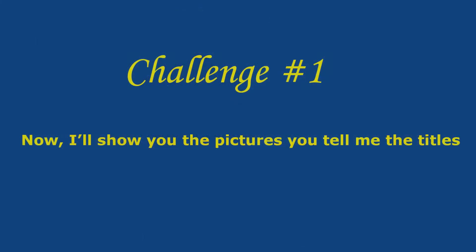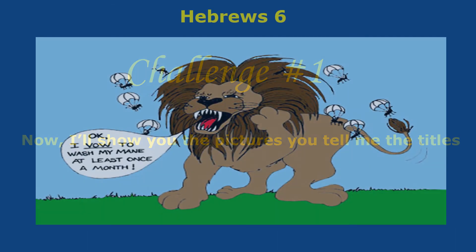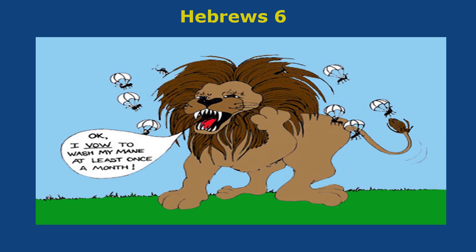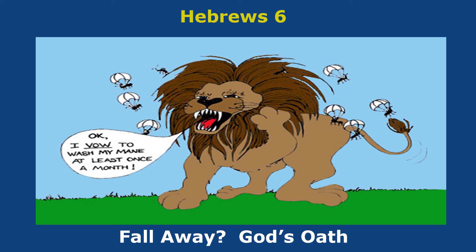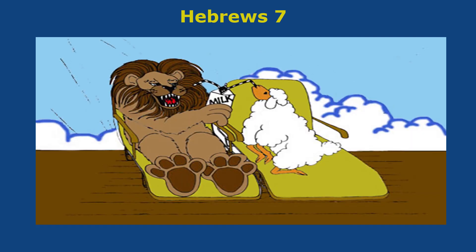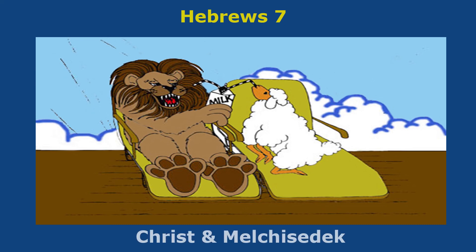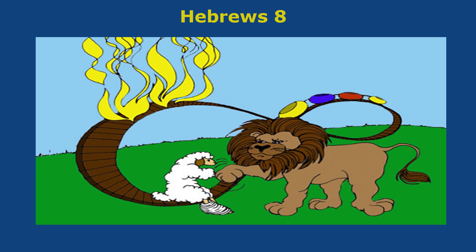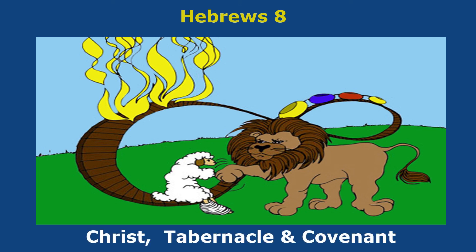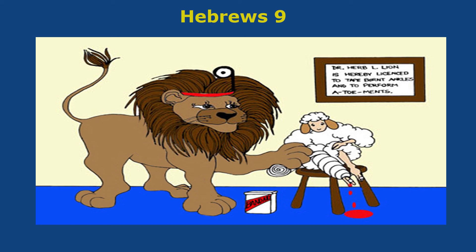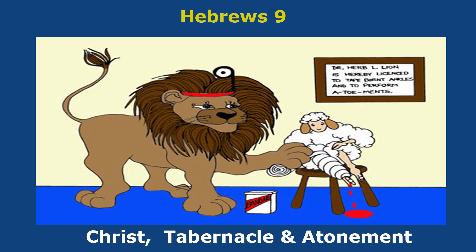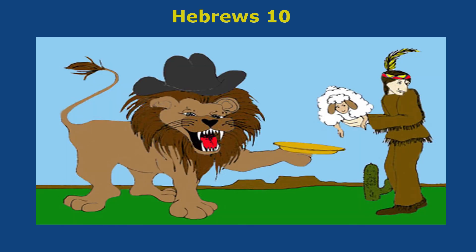Now you're ready for challenge number one. I'll show you the pictures — you tell me the titles. What's the title of chapter 6? Chapter 6 is Fall Away, God's Oath. What's chapter 7 about? Chapter 7 is Christ and Melchizedek. What's the title of chapter 8? Chapter 8 is Christ, Tabernacle, and Covenant. What's in chapter 9? Chapter 9 is Christ, Tabernacle, and Atonement. What's in chapter 10? Chapter 10 is Christ and Offerings.